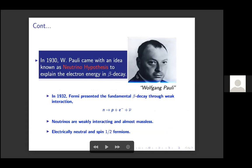Later, in 1930, the famous particle physicist Wolfgang Pauli came with an idea called the neutrino hypothesis. He proposed that beta decay is not a two-body decay process but rather a three-body decay process. Pauli did not name the particle 'neutrino' — he thought of it as a neutron. After Fermi gave a successful and consistent beta decay theory in 1932, Fermi gave it the name 'neutrino.'